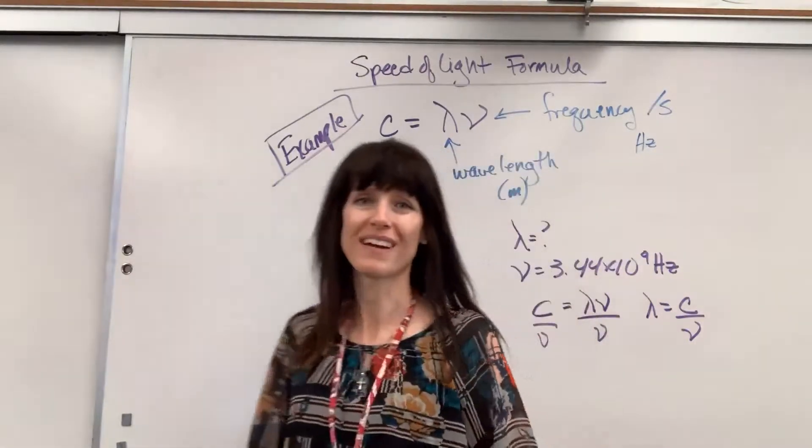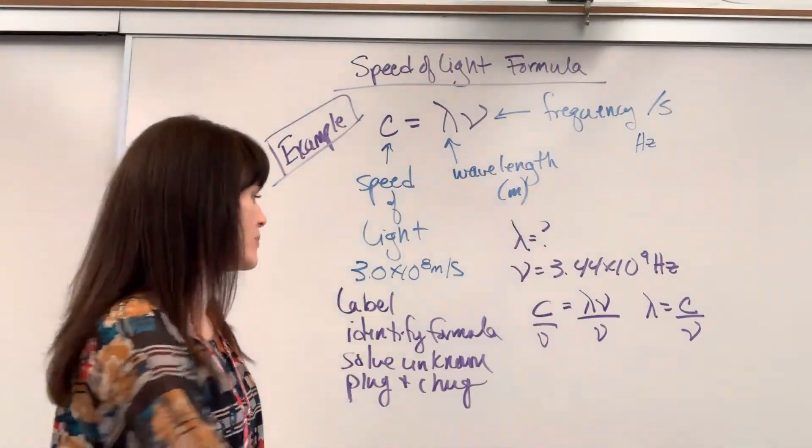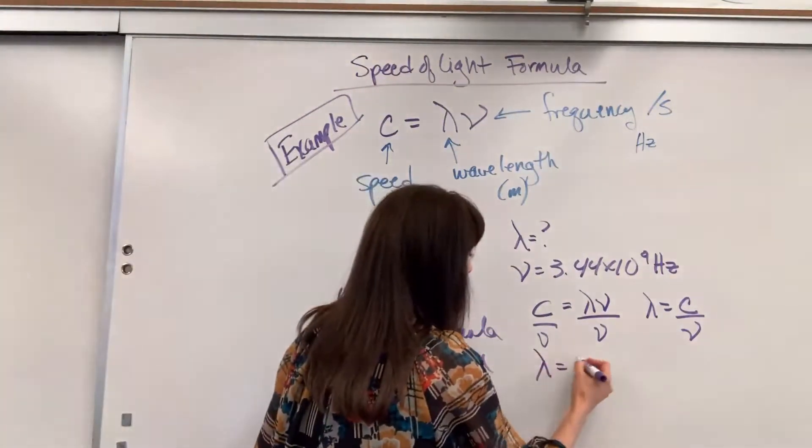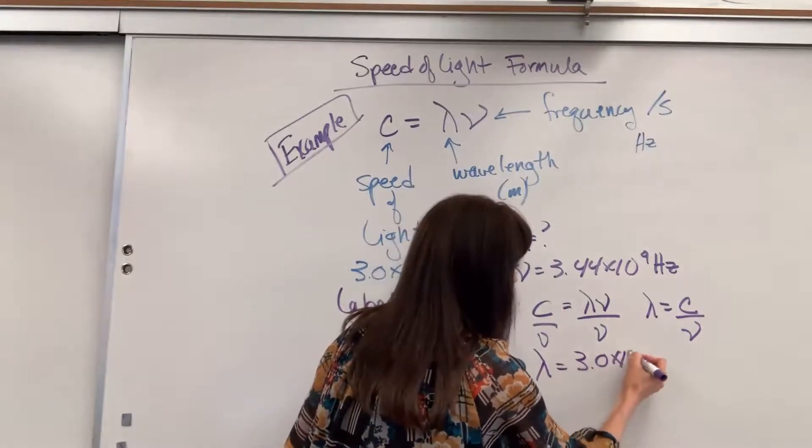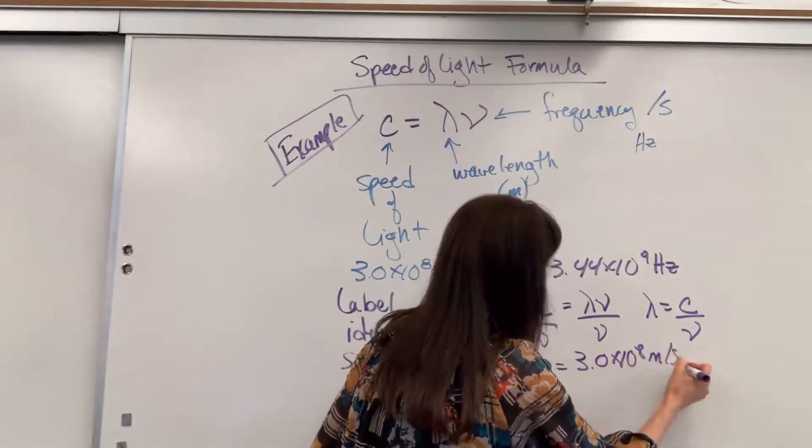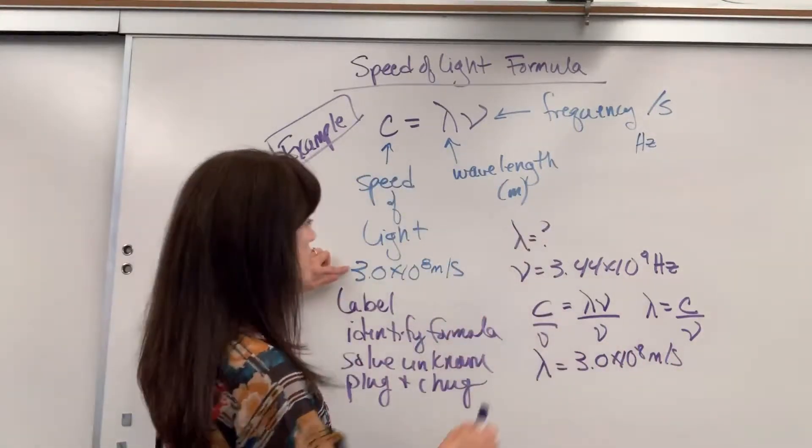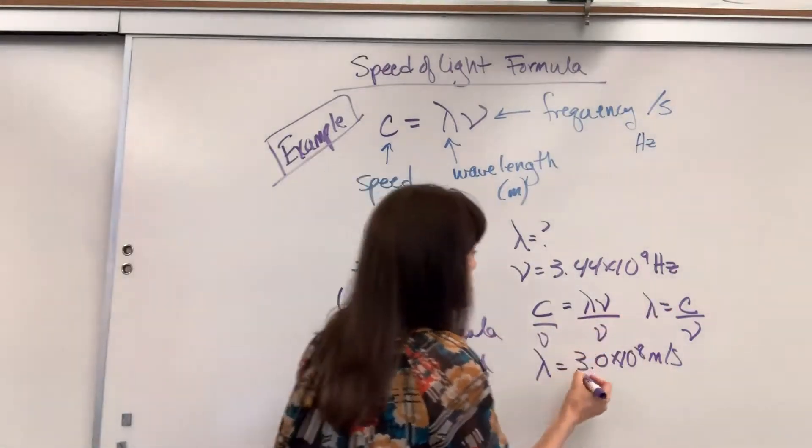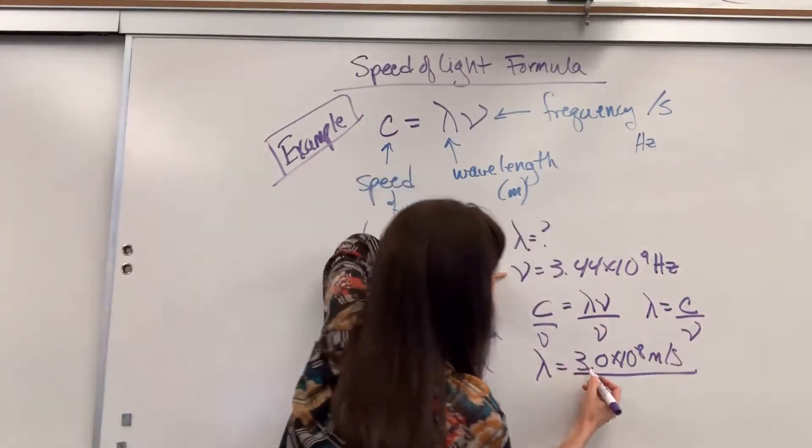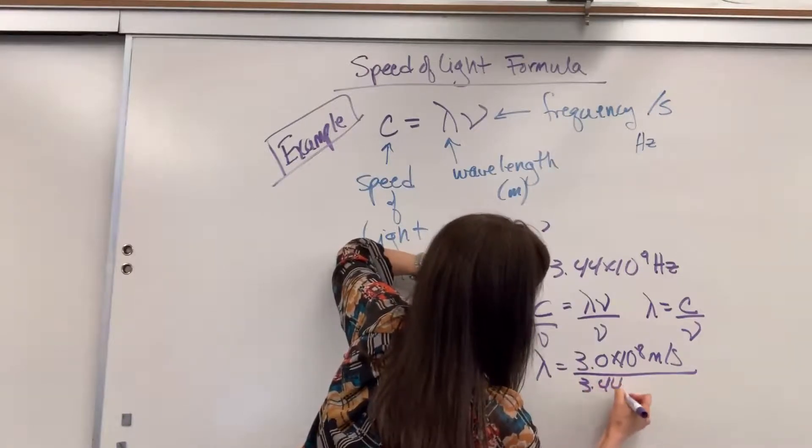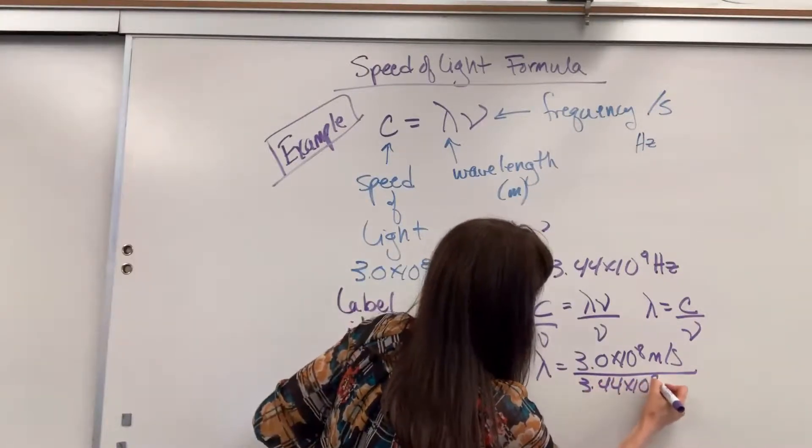Now we're on to the very last easy piece, the plug and chug. So lambda will be 3.0 times 10 to the 8 meters per second. I just plugged in the speed of light for C divided by my frequency nu, which is 3.44 times 10 to the 9.